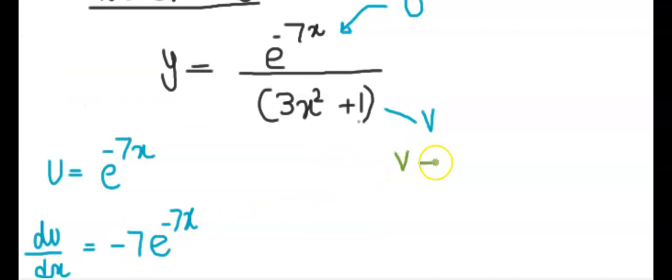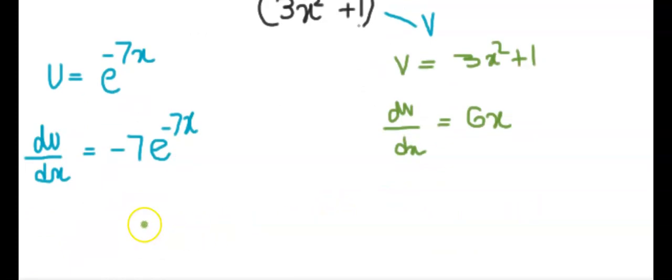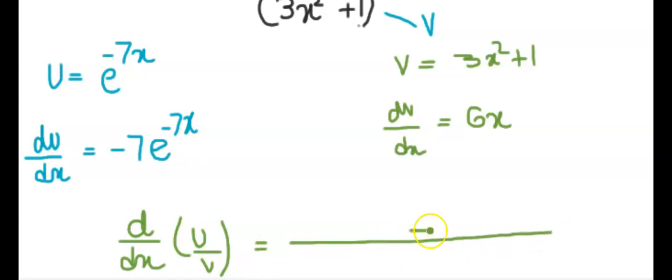When you differentiate the v, dv over dx, that will be 6x. That's it. Then you use a formula for the quotient rule. Which is this. And then find the simplify and find the answer.